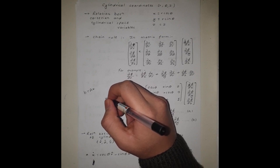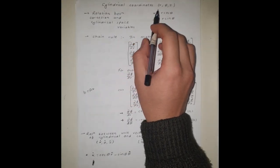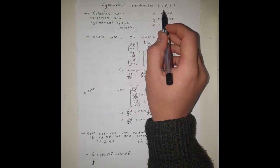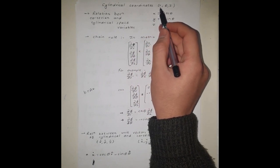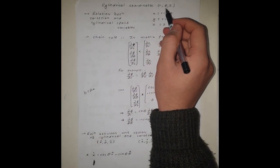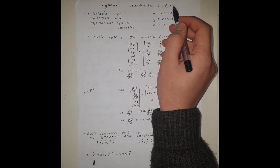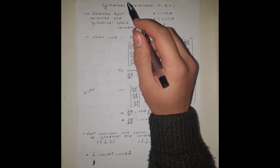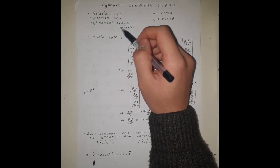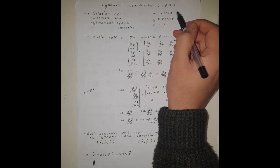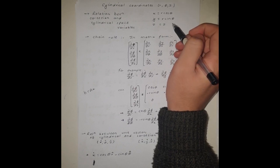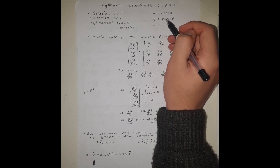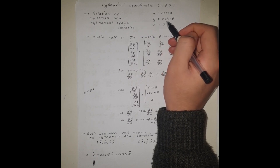Cylindrical coordinates has three space variables: r, theta, and z, where r is the radial distance from the z-axis, theta is the azimuthal angle, and z is the same as in the Cartesian coordinate system. The relation between the Cartesian and cylindrical space variables is: x equals r cos theta, y equals r sin theta, and z equals z.